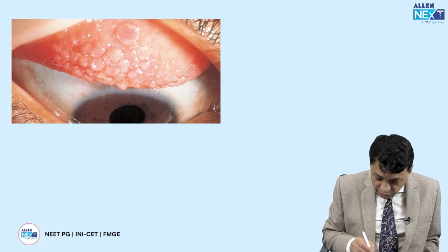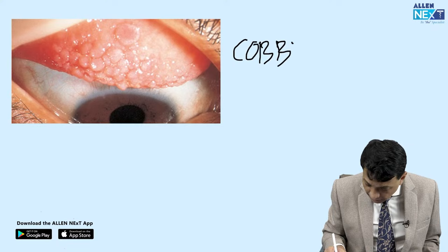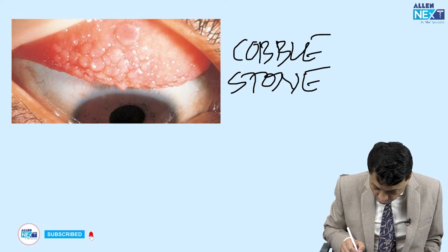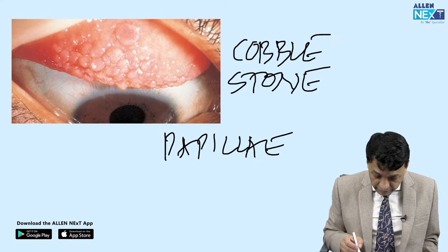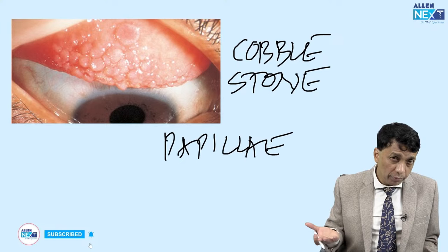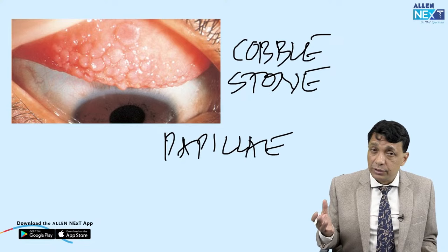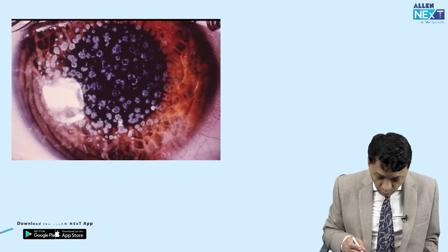Look at these giant flat papillae — these are the famous cobblestone papillae, again seen in spring catarrh or VKC — vernal keratoconjunctivitis. The flat giant stone-like cobblestone papillae are a diagnostic finding. Cobblestone papillae are a sign of allergy, and VKC is an allergy like no other.